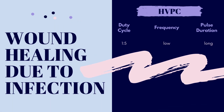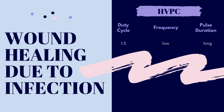Lastly, e-STEM for wound healing due to infection is going to be through high volt pulsed current, and it's going to have a low frequency with a long pulse duration. It is monophasic, meaning that you have to know which side is positive and which side is negative. The negative side, the anode side, is placed over the wound, and then the amplitude is turned to the sensory level.